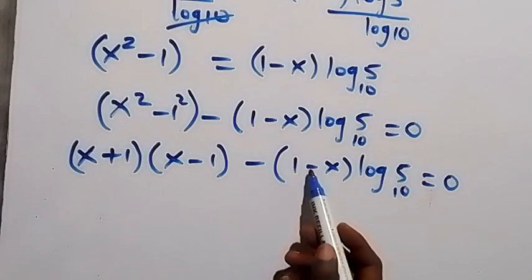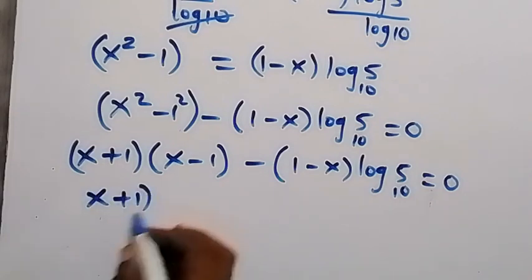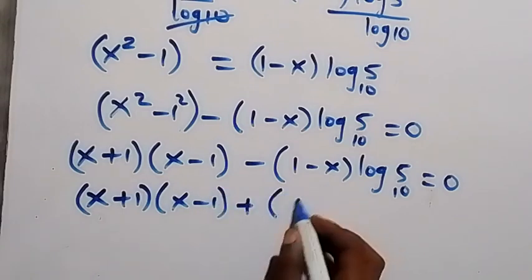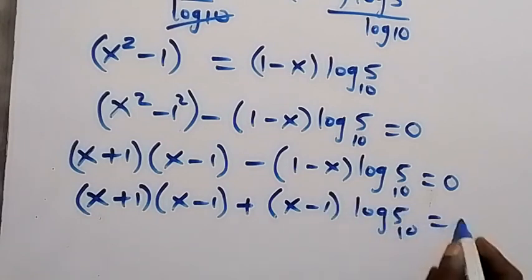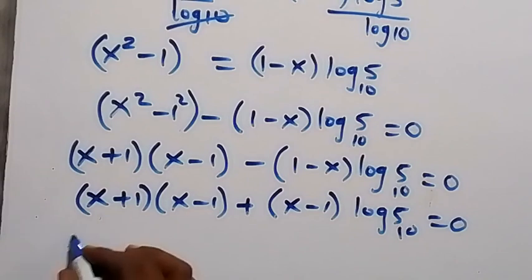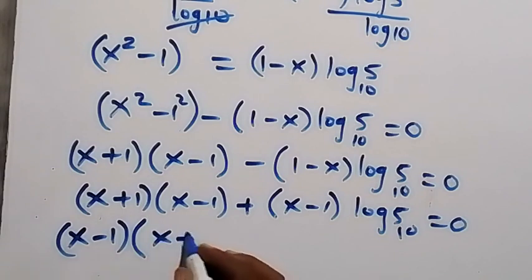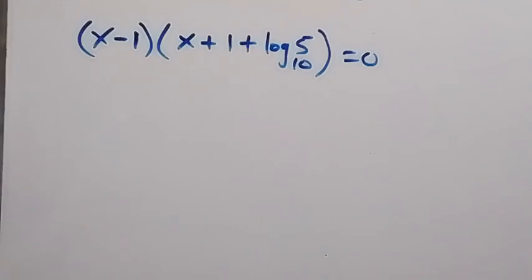From here, notice we have x minus 1. We rewrite the term by factoring out minus 1, so 1 minus x becomes minus times x minus 1, giving a plus sign. This gives us: x plus 1, times x minus 1, plus x minus 1, times log 5 base 10, equals 0. Now x minus 1 is a common factor, so we take it out, leaving x plus 1, plus log 5 base 10, equals 0.